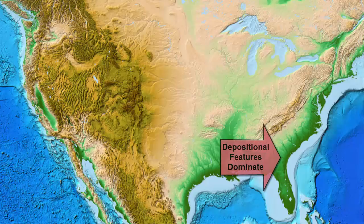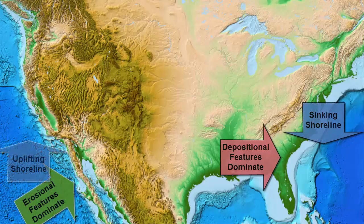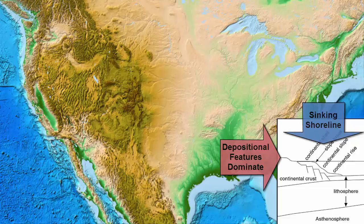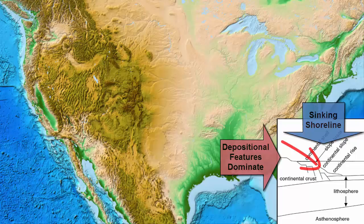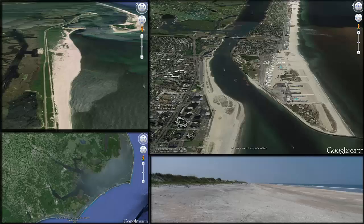Why is the east coast of the United States dominated by depositional features while the west coast is dominated by erosional features? The east coast must be sinking while the west coast is uplifting. The east coast is a passive margin in the middle of the North American plate. The only activity on the coastline is the slow steady piling up of sediment eroded from the mountains and carried to the beaches. As this sediment collects and adds weight to the crust, the land isostatically sinks below the surface, and we get barrier islands, spits, and deltas.